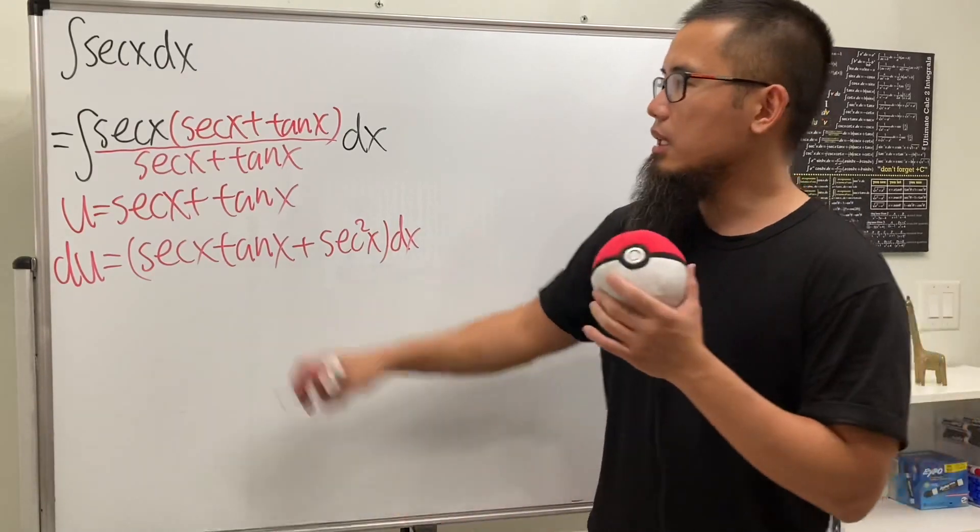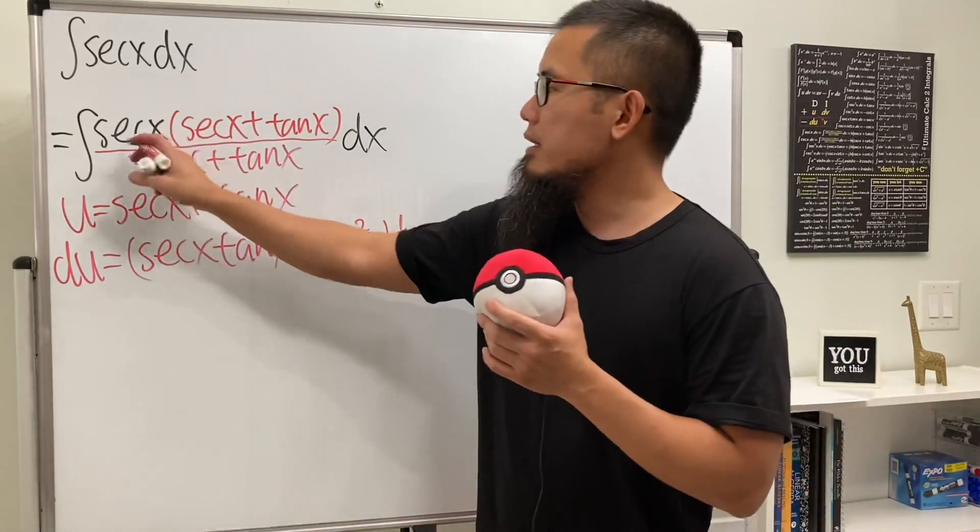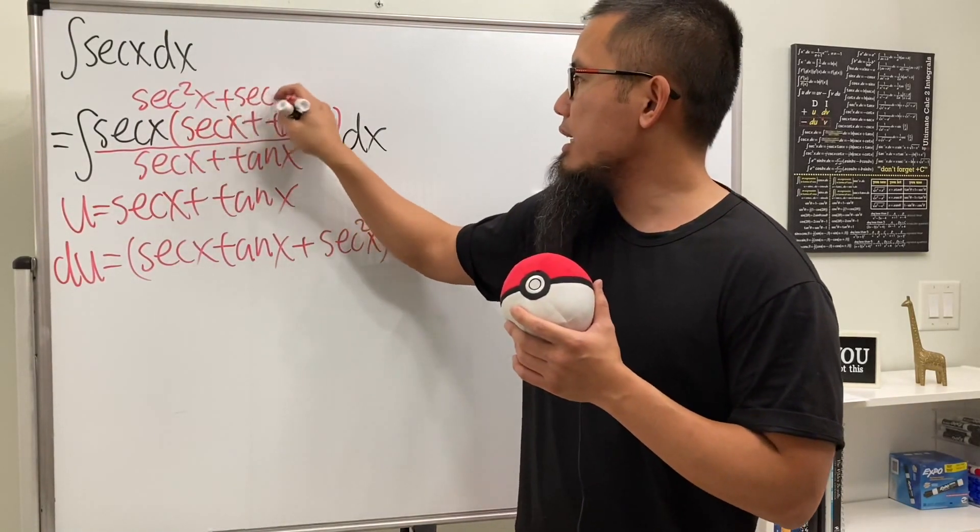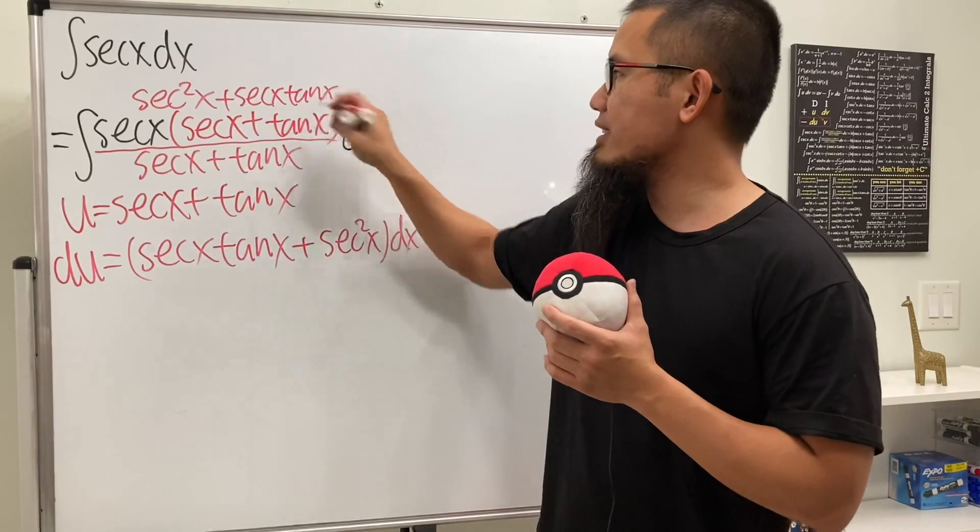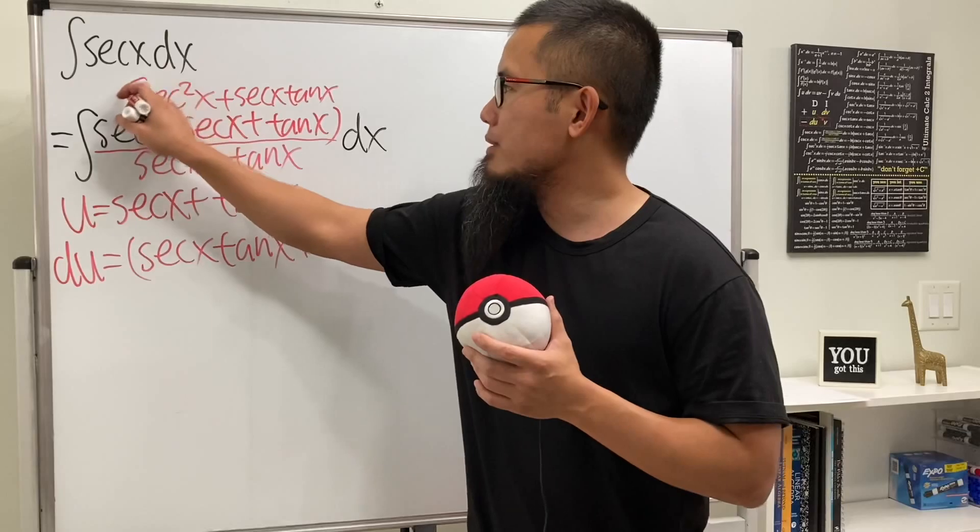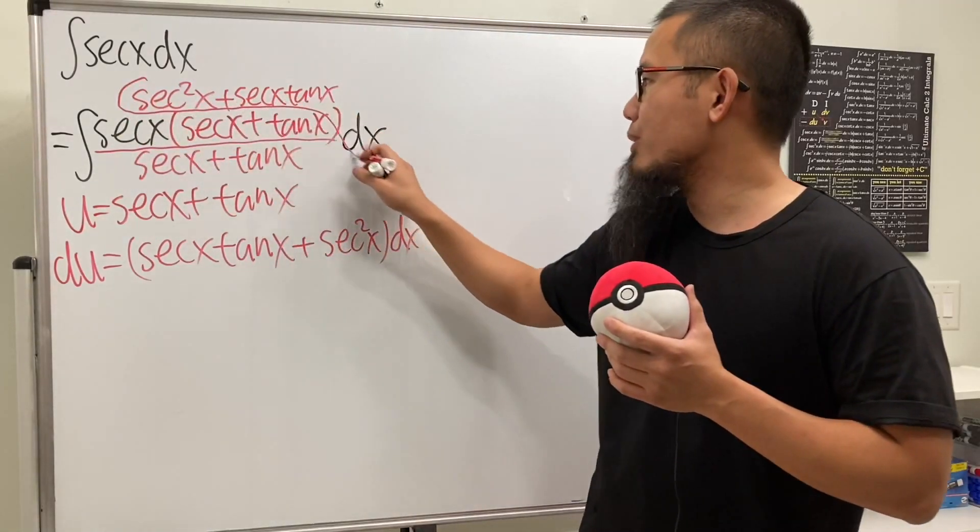And as you can see, if we multiply out the top, this times that is precisely secant squared x, and this times that is secant x times tangent x. So you see that this right here is the du, which happens to be all this right here.